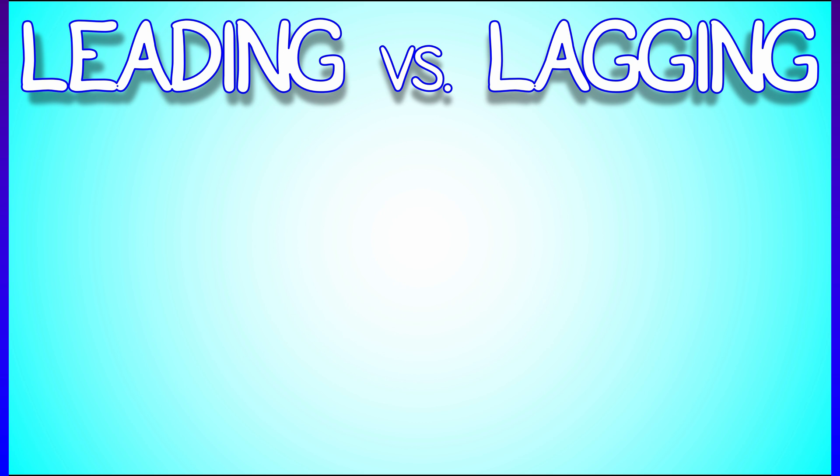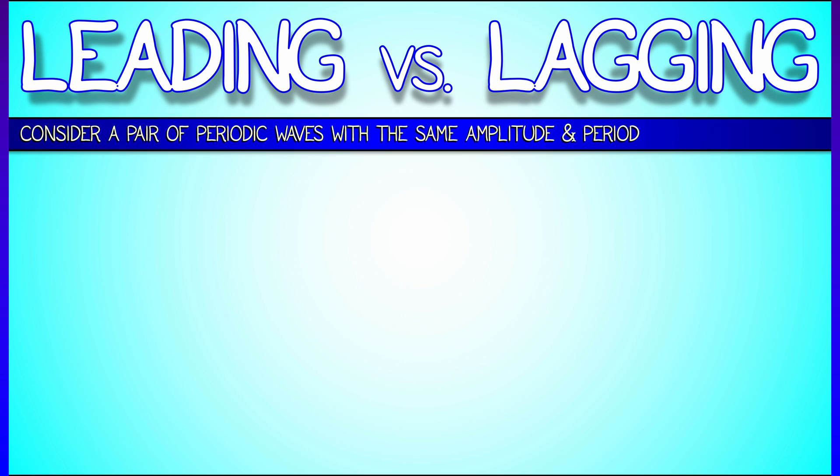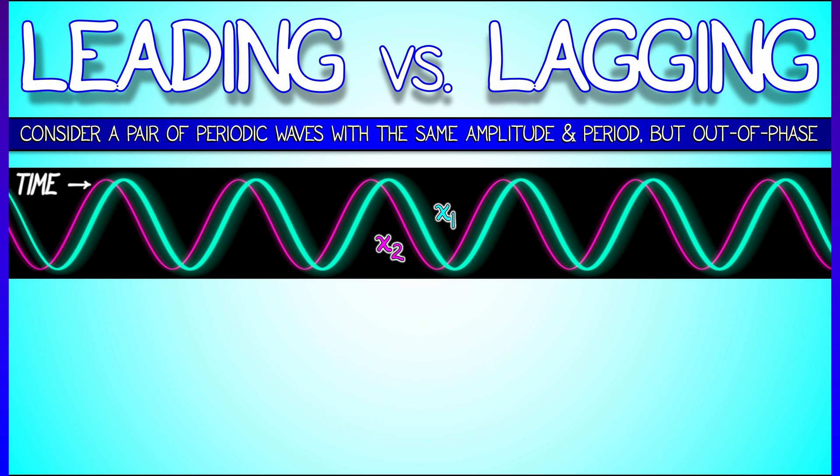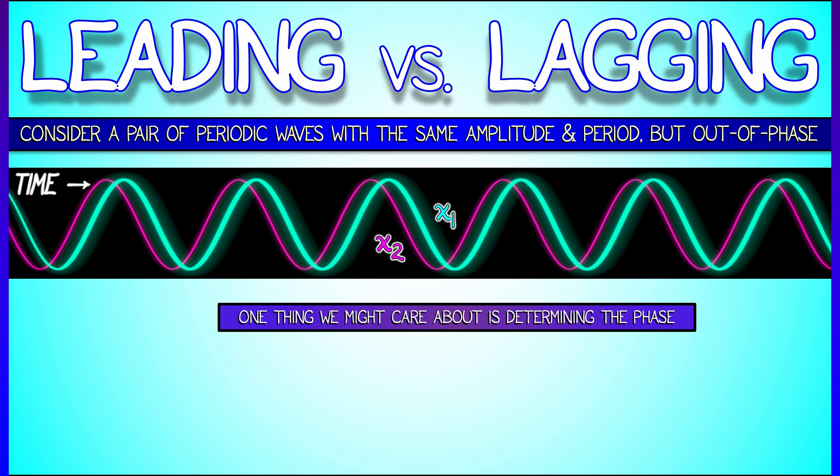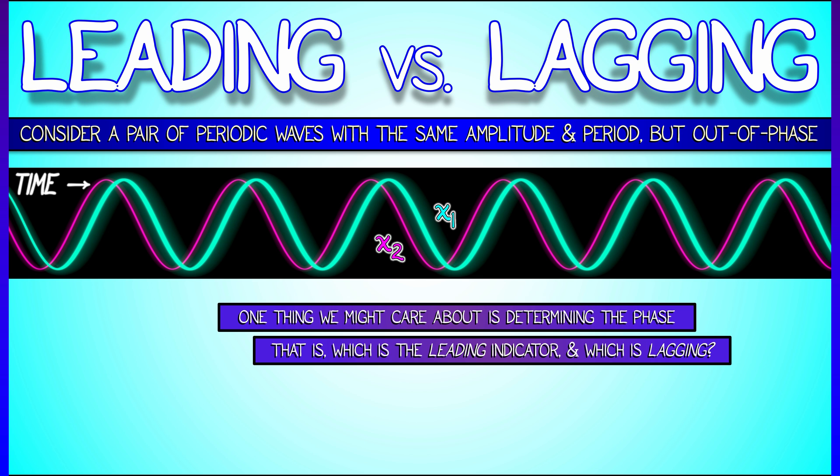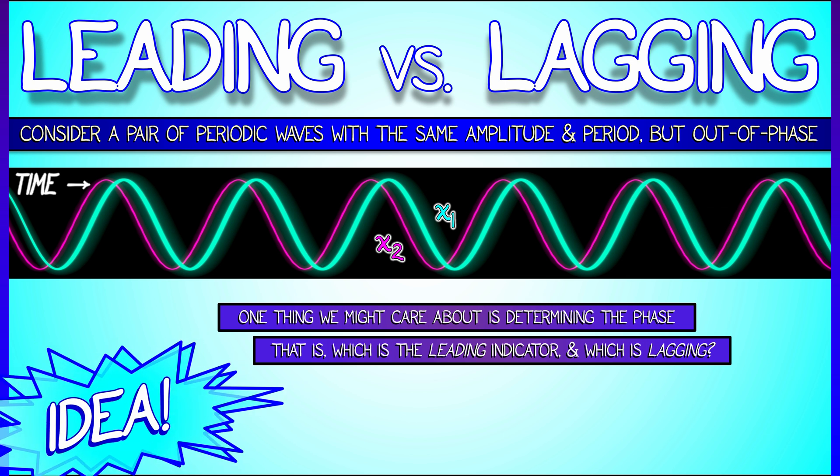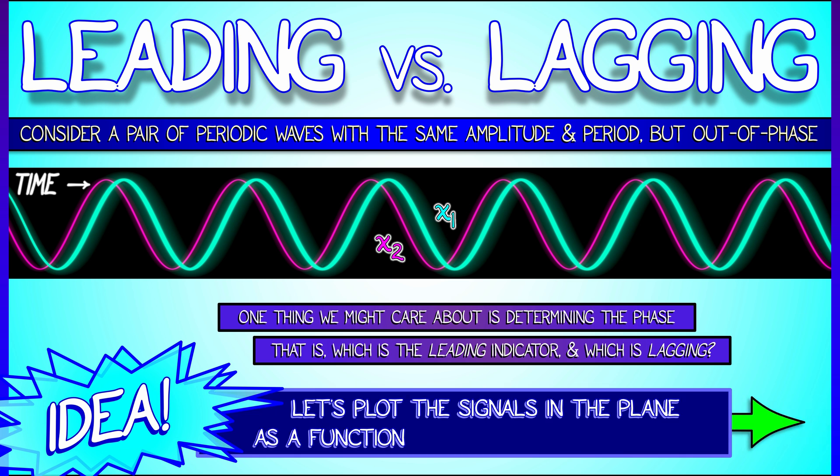Here's a simplified setting with a cool problem. Let's say that you have two sine waves, periodic waves, same amplitude, same period, but they're a little bit out of phase. Let's call these x1 and x2. Now, one thing that you might care about is determining that phase, figuring out which is the leading signal and which is the lagging signal. You hear that terminology in economic data all the time. Well, there are lots of ways to do this for sine waves, but here's one that connects to things that we've thought about.